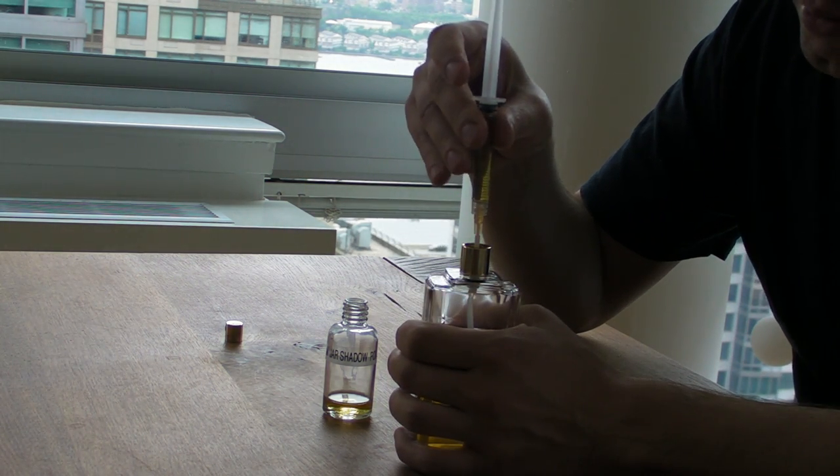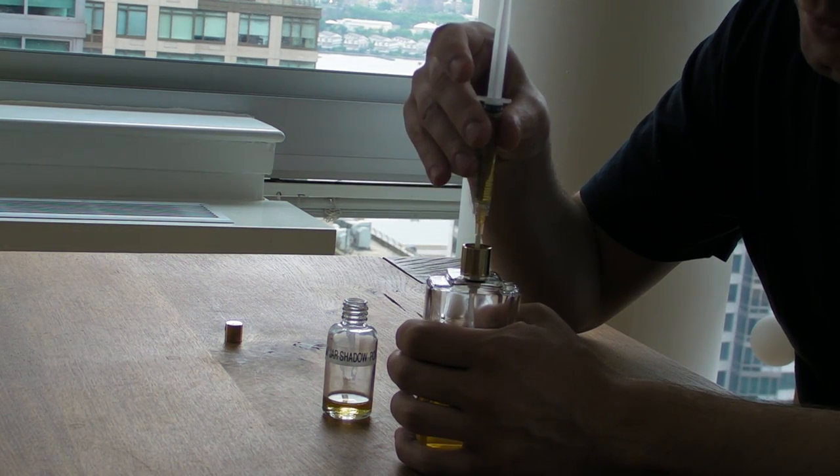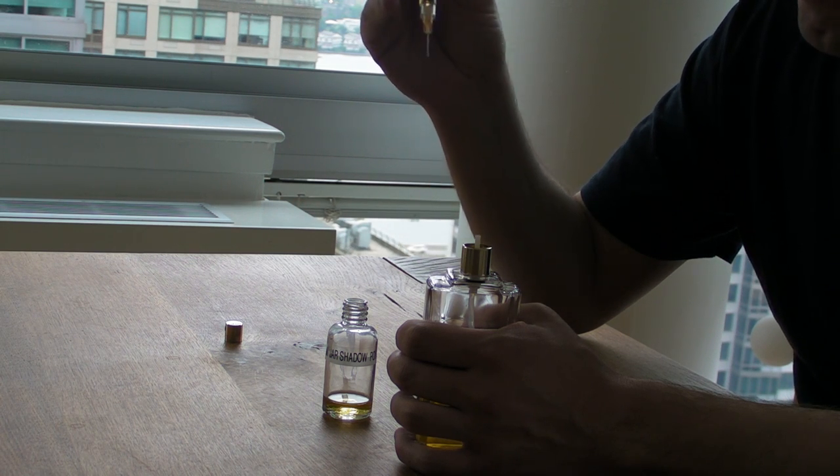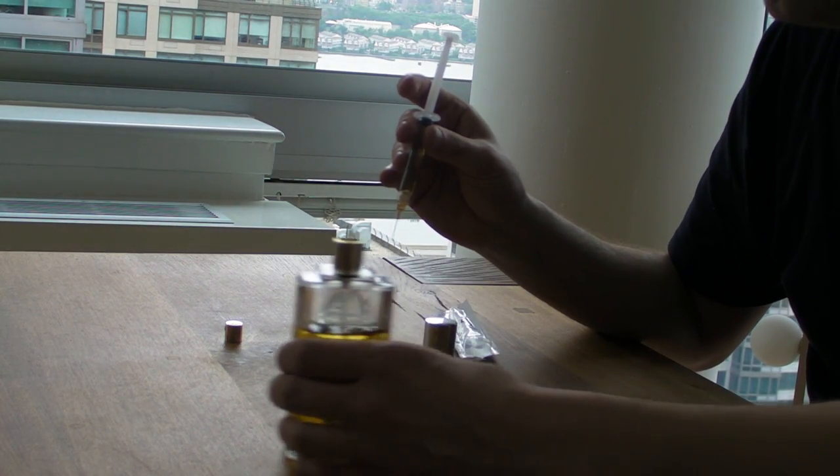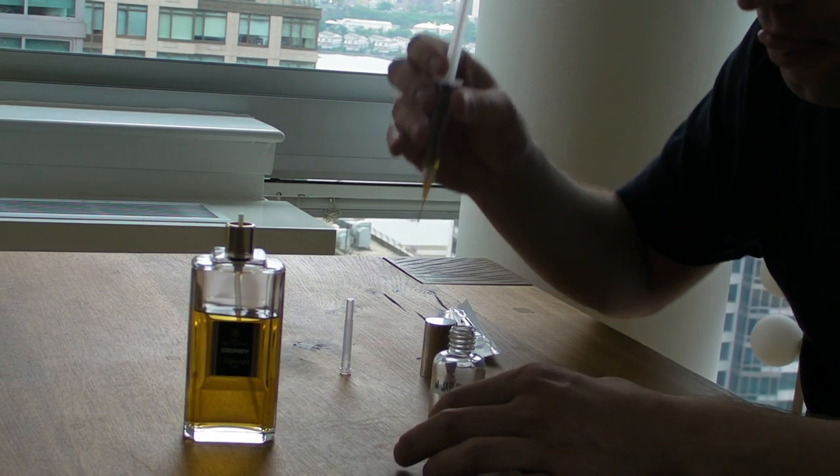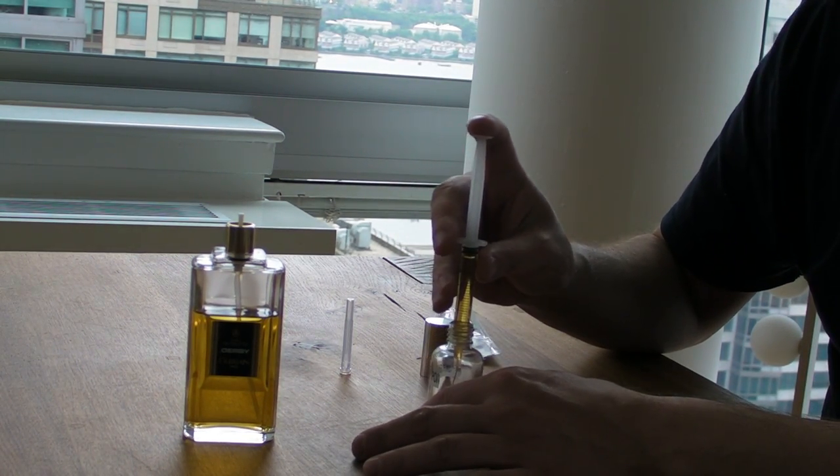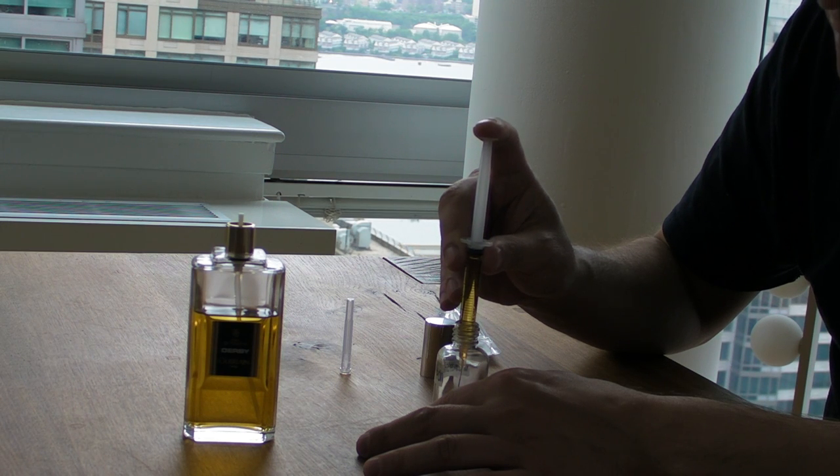Once it's full, just release the top of the tube and push back up again. Remove the syringe and just release it very slowly into your decant container.